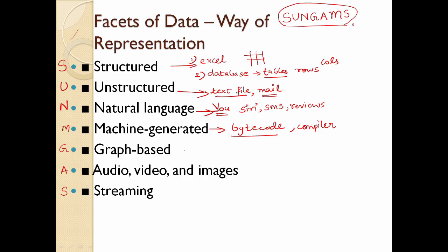Then Graph-based. Graph-based data. For example, you can use Instagram or Facebook. On Facebook, there is a Friends tab — you can choose friends. Your friends are a set of connections, and this kind of network works well as graph-based data.